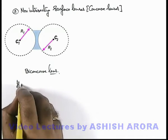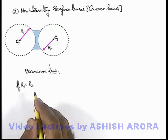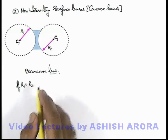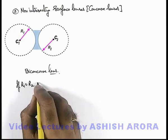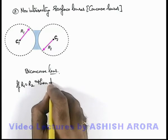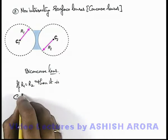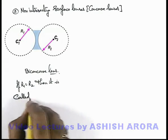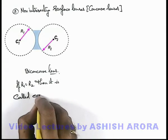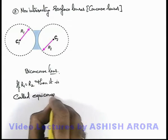If r1 is equal to r2, that means if the lens is symmetric, then it is called an equi-concave lens.